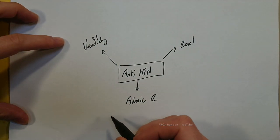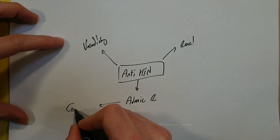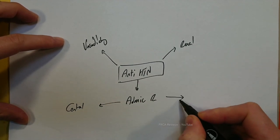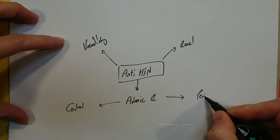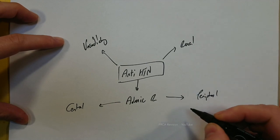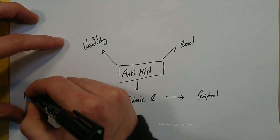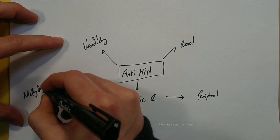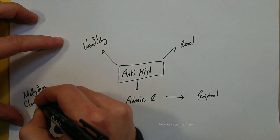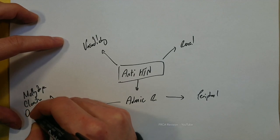So in the adrenergic receptor, we can start with central or we can break this down into the peripheral. So the central, we have methyldopa as an example, clonidine, and dexmedetomidine.